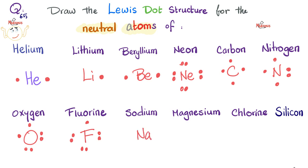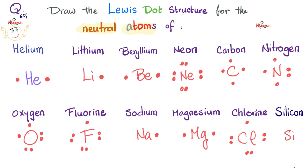Sodium has one valence electron — just one dot. Magnesium is in group two so it has two valence electrons — one on each side. Chlorine, another halogen, has seven valence electrons: one through four, then pair to reach seven. Silicon is in the same group as carbon — it has four valence electrons: one, two, three, four. If you're not doing this with pen and paper, you will forget it on the exam — get proactive!